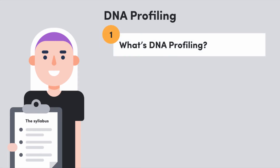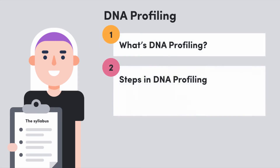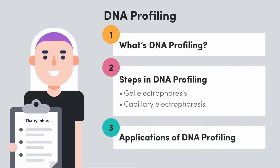In this video we'll ease into it with a general explanation of what DNA profiling is. Then we'll look at the steps in DNA profiling by breaking it down into the two main ways a DNA profile can be constructed: either using an electrophoresis gel or capillary electrophoresis, just like DNA sequencing. As for the applications — how we can use DNA profiles to solve crimes or determine paternity — we'll save those for another lesson.